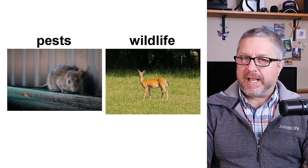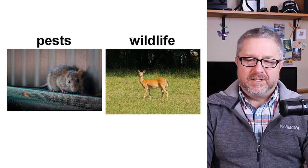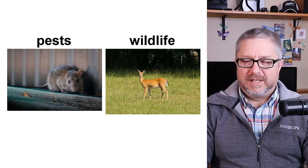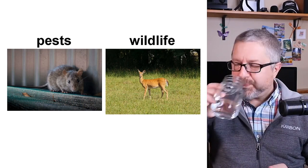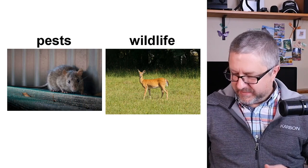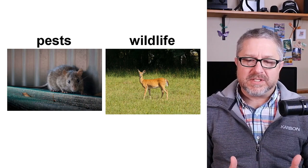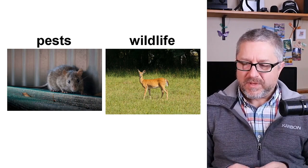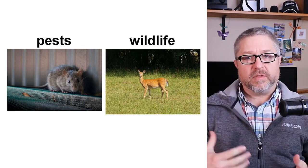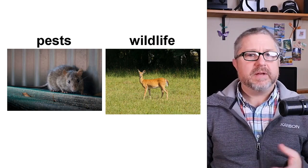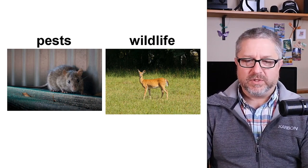There are animals in the city and in the country, but they're a little different. In the city, you might have pests — things like mice, rats, squirrels, and raccoons that can get into your garbage. Out in the country, we have animals too, but we would call them wildlife instead — things like deer, raccoons, and squirrels.